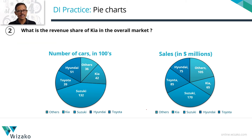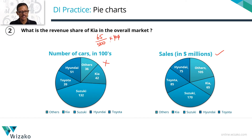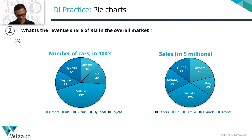Question two: revenue share of Kia in the overall market. Kia made 65 million dollars out of a total of 500 million dollars. So Kia's share is 65 divided by 500 times 100. Canceling zeros gives 65 divided by 5, which is 13%. The revenue share of Kia is 13%.